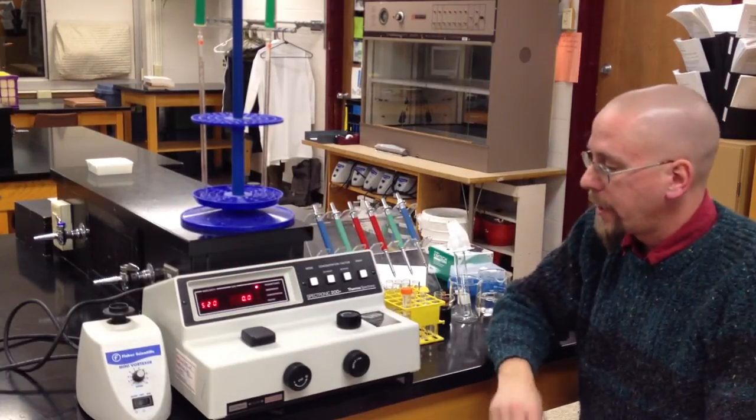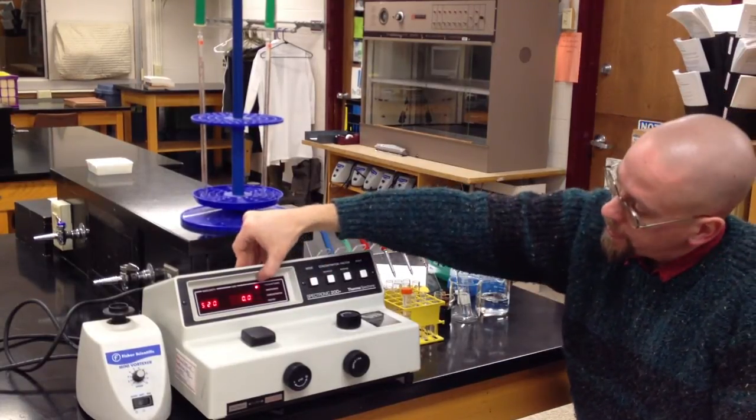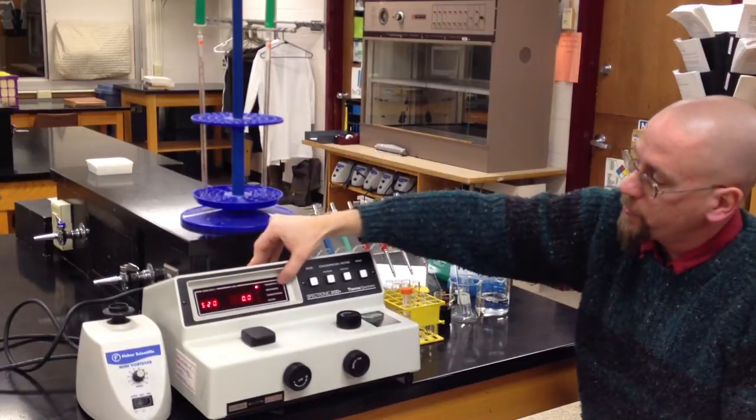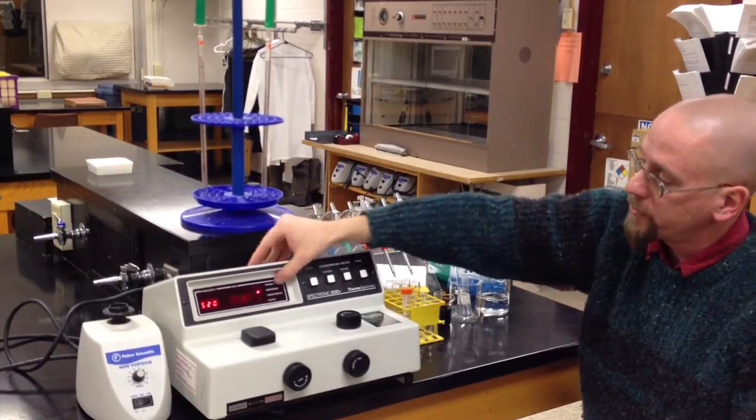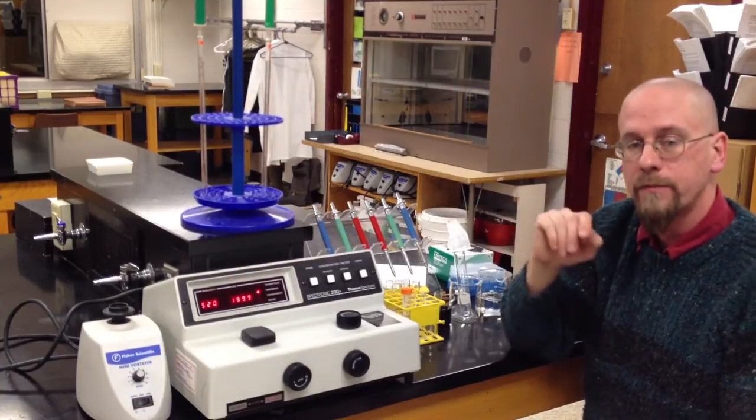Once we've done that, now I can set my mode. The default setting is transmittance. What we are going to measure is absorbance. So if I press the mode button to absorbance, now I get a flashing number. That's just fine.